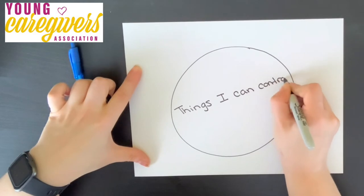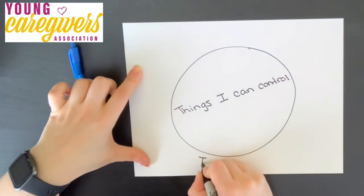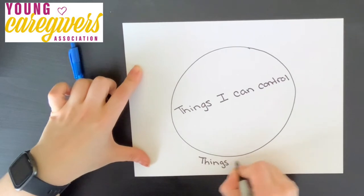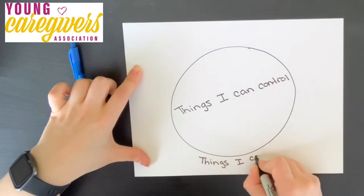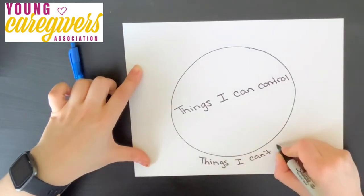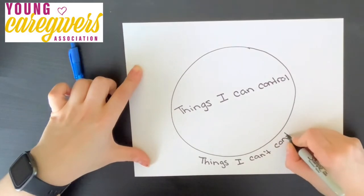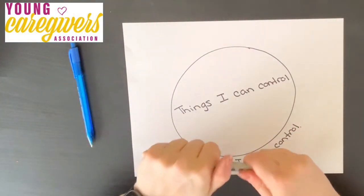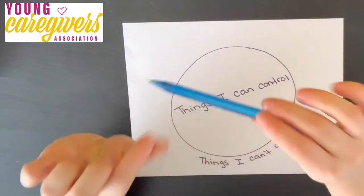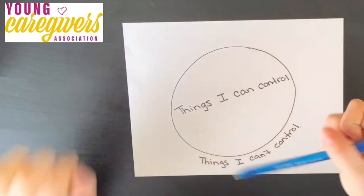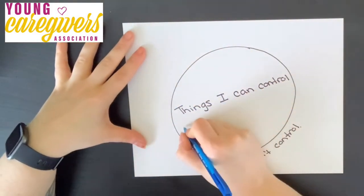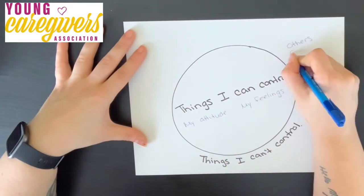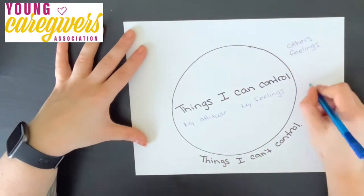Inside this circle is going to be all those things that you personally can control. Whereas outside the circle, you're going to write the label: things I can't control. So outside this circle is going to be all those different things that happen around you but you maybe can't control yourself. Then take a lighter colored writing utensil and start writing all the things you can think of that you can control and that you can't control.